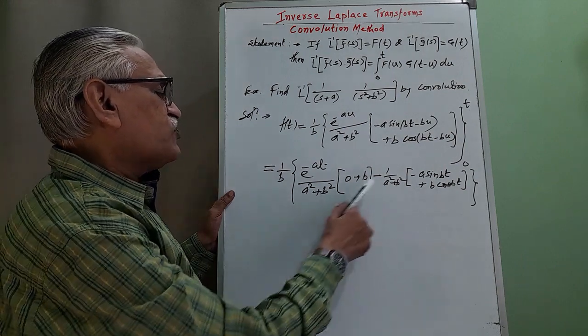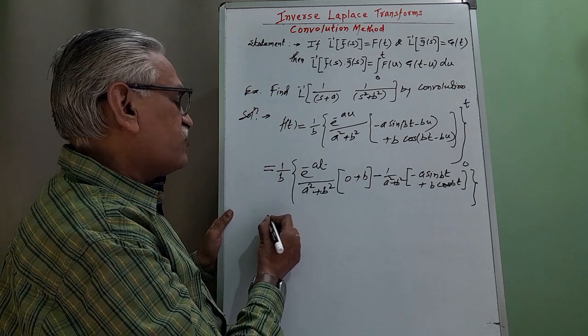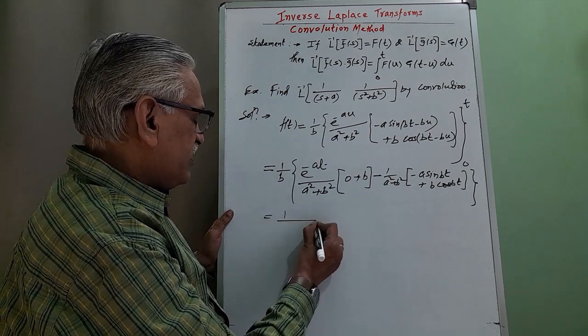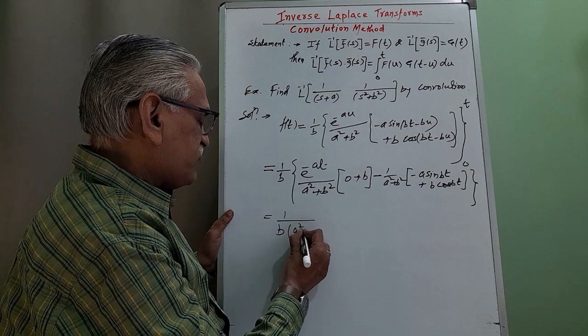And therefore, from these two terms, I can take 1 upon a square plus b square common. Therefore, it is 1 by b into a square plus b square.